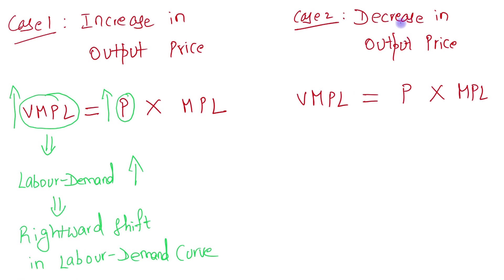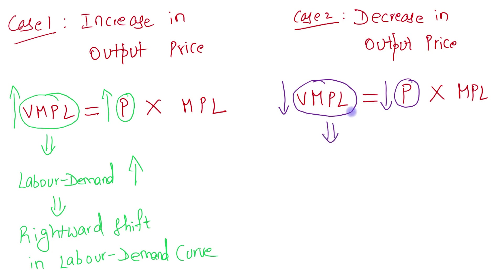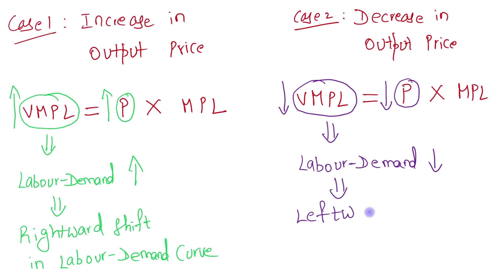Case 2 is a decrease in output price. If output price is decreased, it will lead to a decrease in the value of marginal product of labor. Since VMPL is the labor demand curve, the labor demand will be decreased, and this will lead to a leftward shift in the labor demand curve.